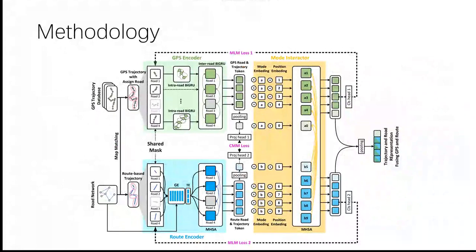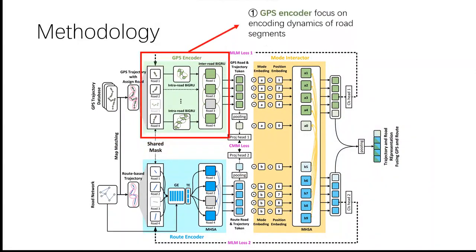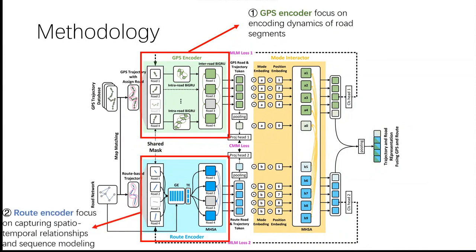Specifically, we propose a novel representation learning framework named JGRM based on self-supervised technology. We develop two encoders, each tailored to capture representations of GPS trajectories and route trajectories, respectively.